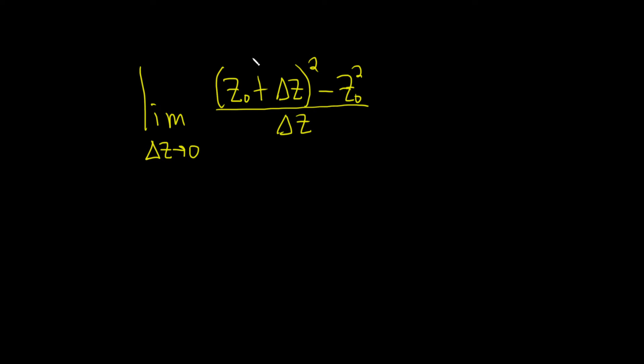So another strategy maybe is to multiply out the numerator and see what happens. So this is the limit as delta z approaches 0. And so here, to multiply this out,